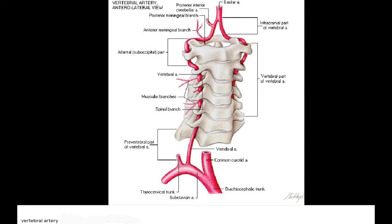In this video, we will be discussing the vertebral artery. The vertebral artery consists of four parts. The first part is the cervical part, and it extends from the origin to the foramen transversarium of C6 vertebrae. The vertebral artery is a branch of the subclavian artery, originating from the first part of the subclavian artery, up to the foramen transversarium of C6 vertebrae — this forms the cervical part.